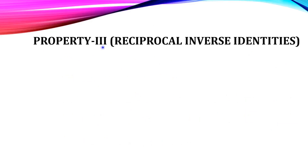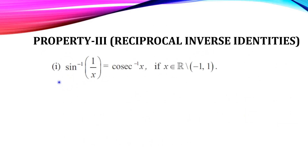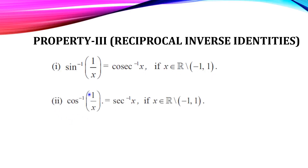Next, Property 3: Reciprocal Inverse Identities. First, sin inverse of (1/x) = cosecant inverse of x — since the reciprocal of sine is cosecant. This holds where x belongs to all real numbers except (−1, 1). Similarly, cos inverse of (1/x) = secant inverse of x — the reciprocal of cosine is secant. This holds where x belongs to all real numbers except (−1, 1).